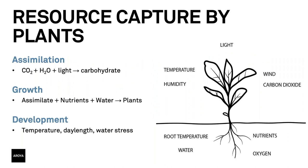The picture on the right, borrowed from Dr. Bruce Bugbee at Utah State University, shows the nine environmental variables or parameters that represent the main connections between the plant and its environment. It's useful to think of some of these environmental parameters — such as light, carbon dioxide, water, and nutrients — as resources, and to consider the factors that enable the plant to capture those resources. Assimilation is the process by which carbon dioxide, water, and light from the plant environment are captured and converted to carbohydrate. To grow, the plant captures nutrients and water and combines those with the carbohydrate produced by assimilation to make stems, leaves, roots, flowers, and all that makes up the biomass of the plant.